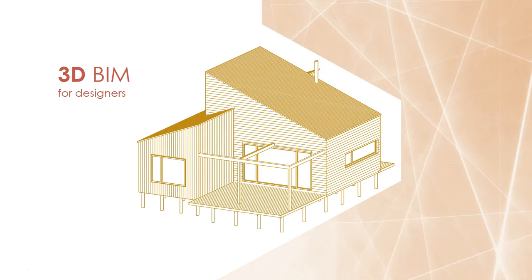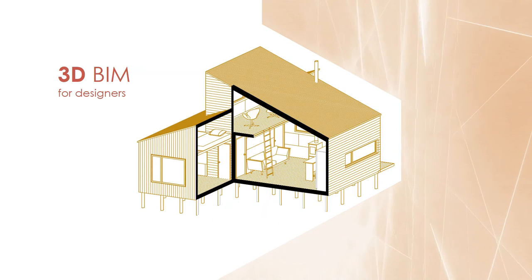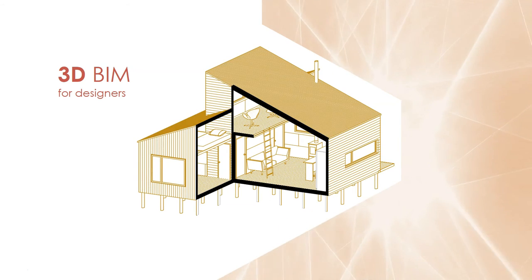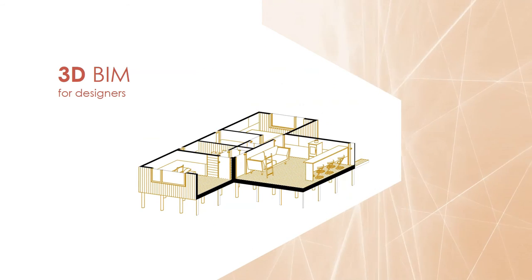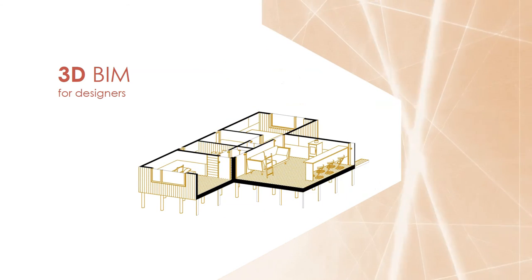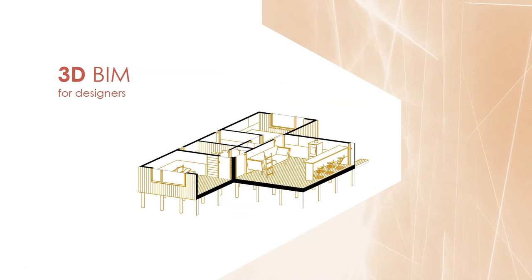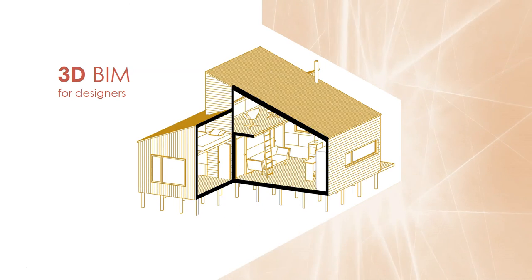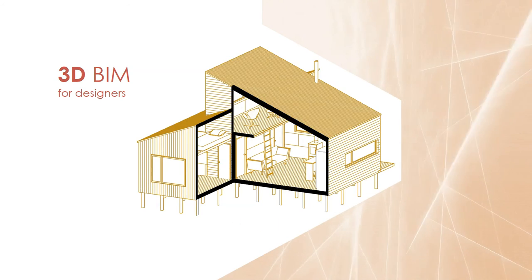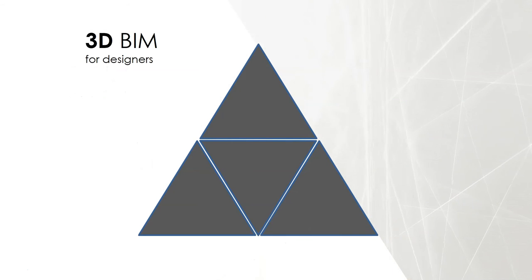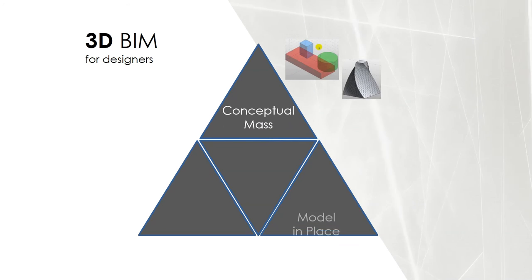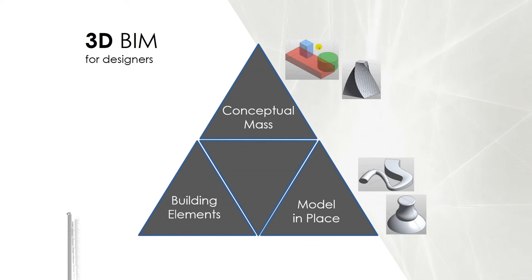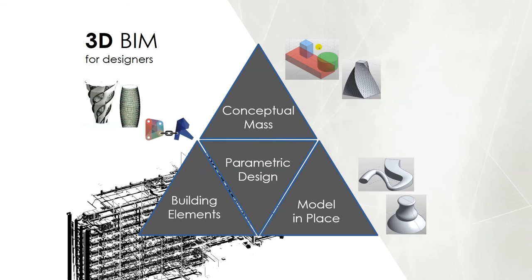3D modeling using BIM tools brings us new possibilities. It is faster, more accurate and coordinated with other disciplines. When you modify a building element or geometry in a view such as plan, section or elevation, the BIM tool coordinates the change in all other views at the same time. Using 3D BIM, we can create conceptual models, objects and geometries, work with building elements and use computational and parametric design.